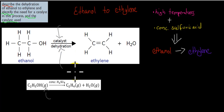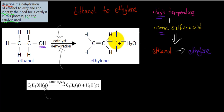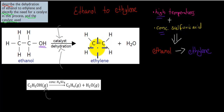Here we have the chemical structure of ethanol. Remember, the difference between ethanol and ethane was simply that OH group here — ethanol has an OH group which ethane does not have. But if we have a catalyst and high temperatures — in this case concentrated sulfuric acid — then we go from ethanol to ethylene. And importantly, when we go from ethanol to ethylene, we also lose a water molecule.